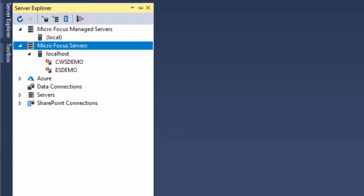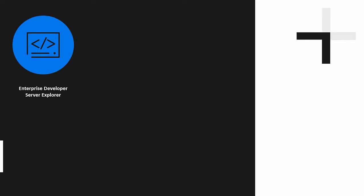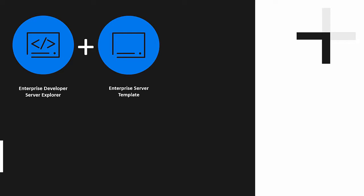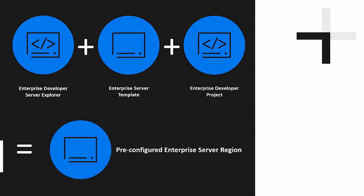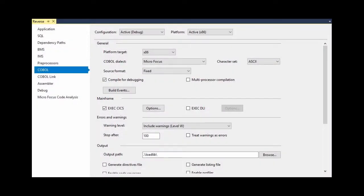The process I've just used to create the CWS Demo region — starting from the Server Explorer in Enterprise Developer, using a template supplied by Microfocus, and associating the new region with an existing project — enables Enterprise Server to preset several points of configuration as it creates the new region. I'll show you some of these in context later in this video. I want to provide a more detailed explanation of one of the preset configuration points, which is an Enterprise Server environment variable named IDE LoadLib. The value of IDE LoadLib is derived from the output path property set in the associated Enterprise Developer project.